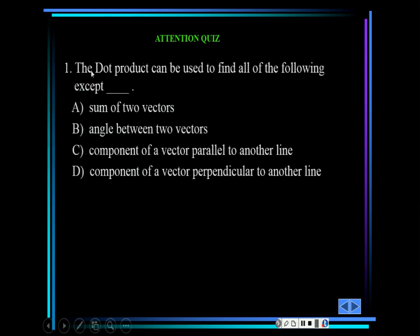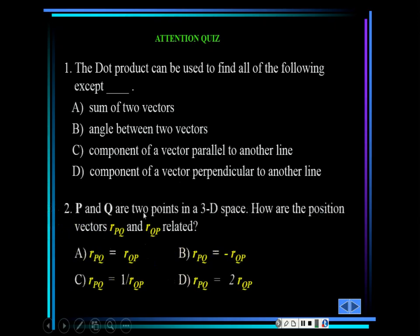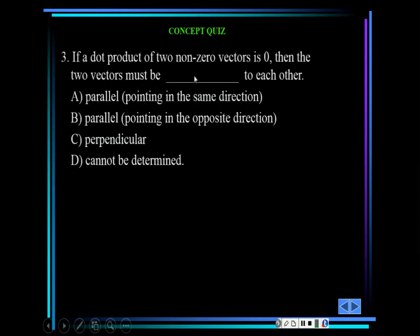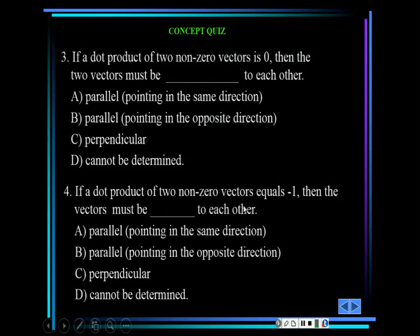Attention quiz: the dot product can be used to find all of the following except — sum of two vectors. That's correct; the sum of two vectors is not calculated using the dot product. If p and q are two points in 3D space, how are position vectors rpq and rqp related? They are equal and opposite. If the dot product of two nonzero vectors is 0, I'll ask you this in class personally.